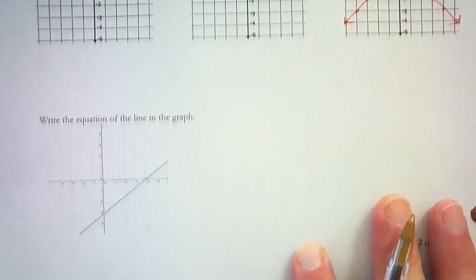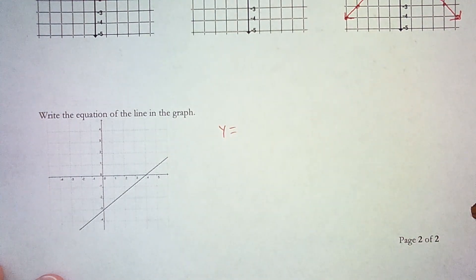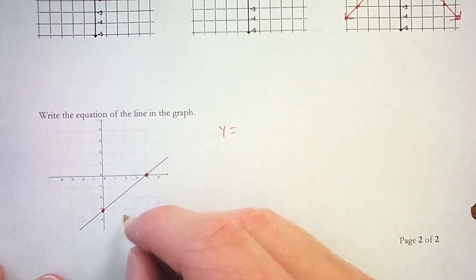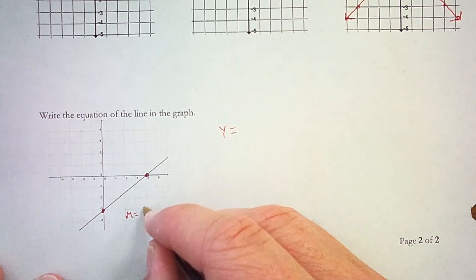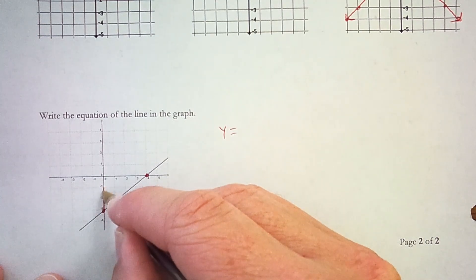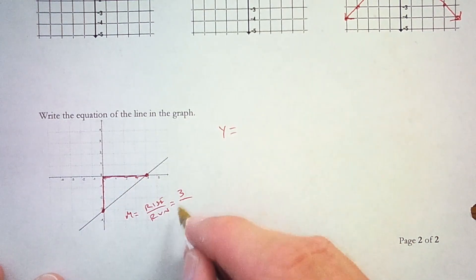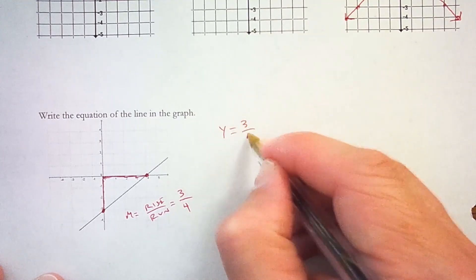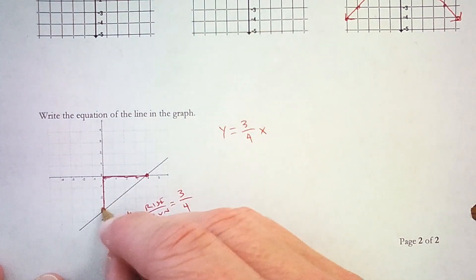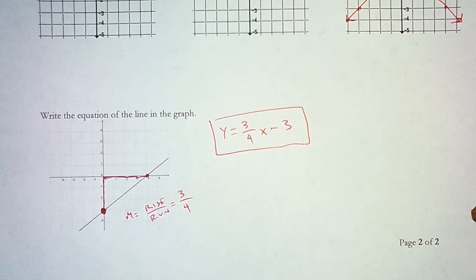Last, we take the graph of a line and write its equation in y equals mx plus b. First we find the slope using two points, counting the rise and run. The rise is 3 units and the run is 4 units, so the slope is 3 fourths. Then we find the y-intercept: the line crosses the y-axis at negative 3. So the equation of the line is y equals 3 fourths x minus 3.